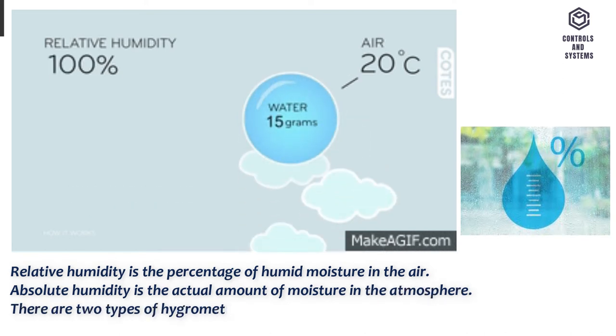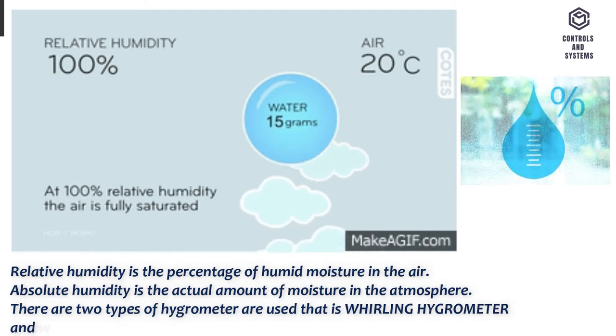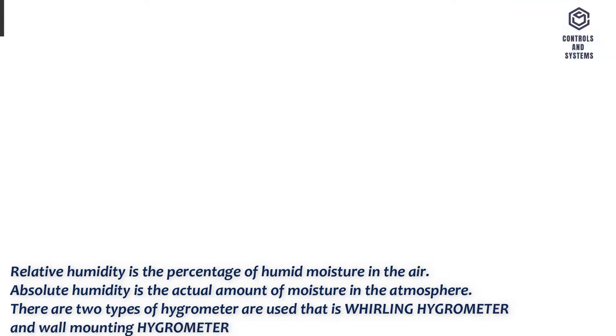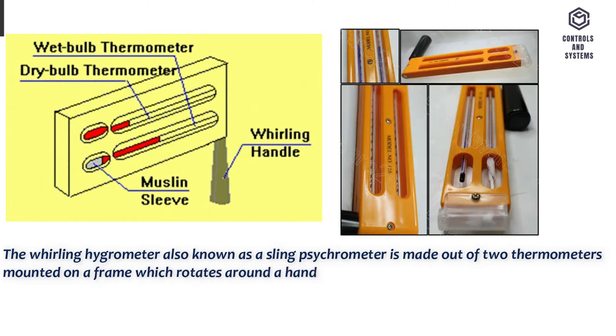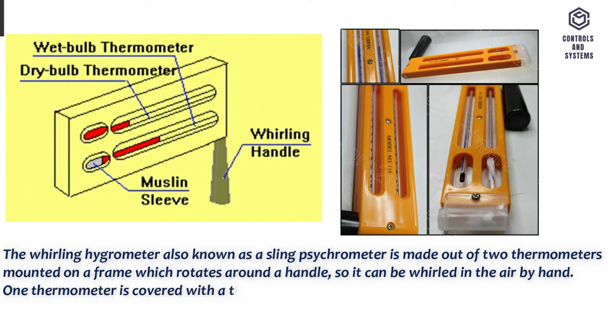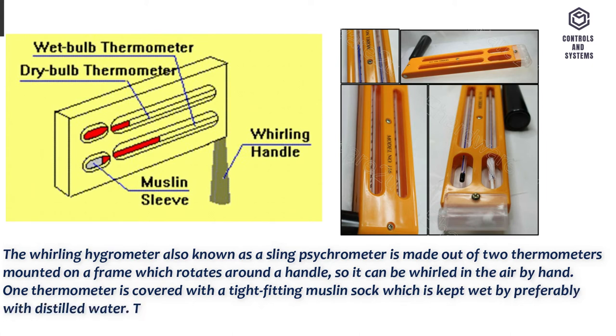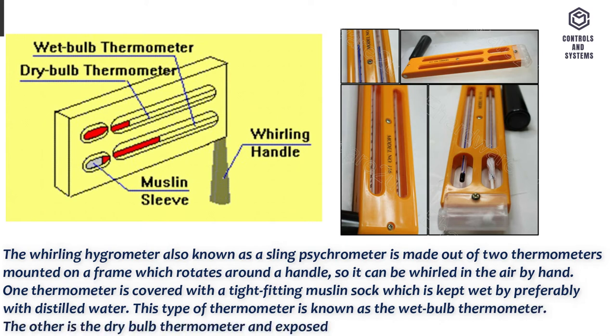There are two types of hygrometer used, that is whirling hygrometer and wall mounting hygrometer. The whirling hygrometer also known as a sling psychrometer is made out of two thermometers mounted on a frame which rotates around a handle, so it can be whirled in the air by hand. One thermometer is covered with a tight fitting muslin sock which is kept wet, preferably with distilled water. This type of thermometer is known as the wet bulb thermometer. The other is the dry bulb thermometer and exposed to the atmosphere directly.